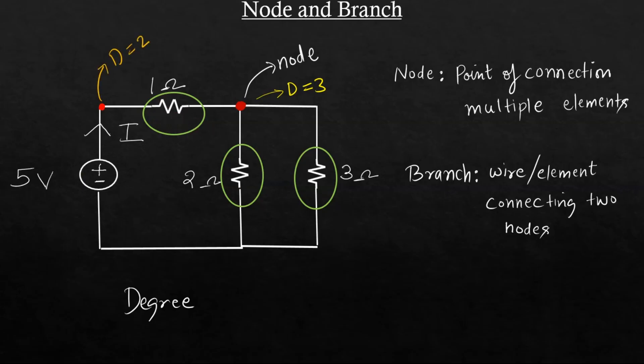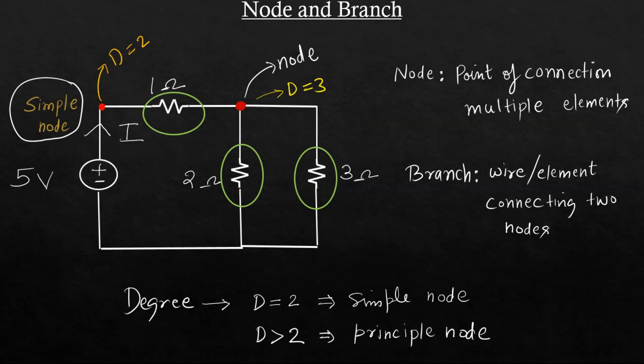Now if degree is equal to 2 it is known as a simple node. And if the degree is greater than 2 it is a principal node. So if degree is equal to 2 it is a simple node, and if degree is greater than 2 it is a principal node. So this is the classification for the node.